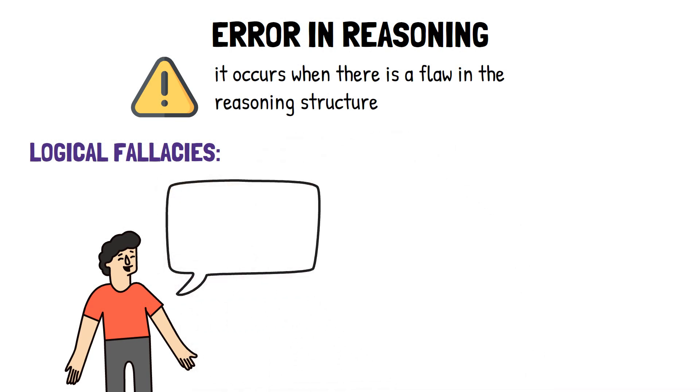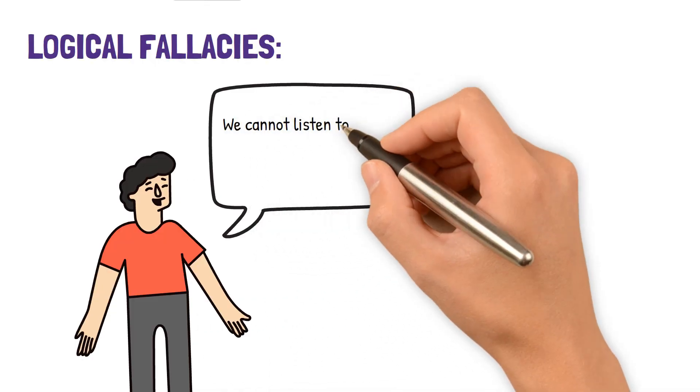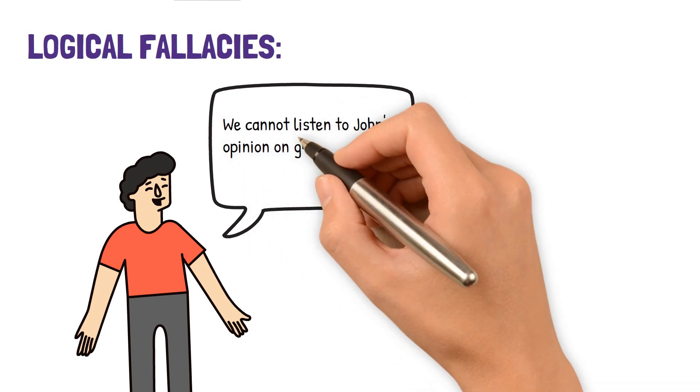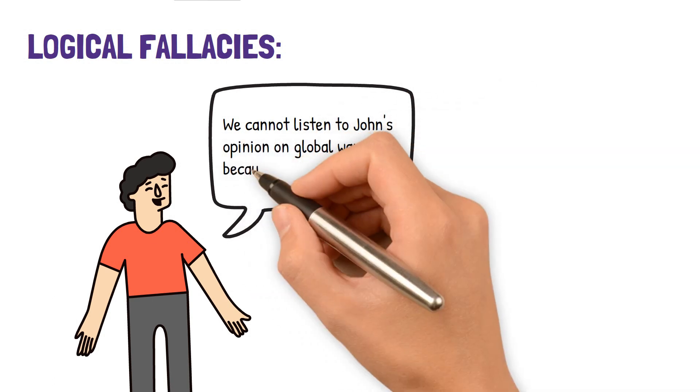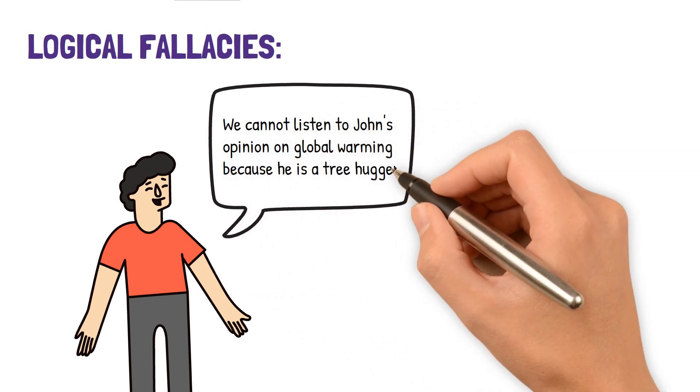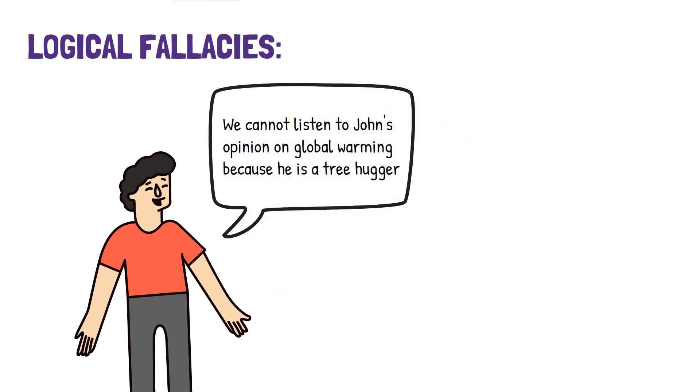For example, an ad hominem fallacy is where an argument is attacked based on the person making it, rather than being attacked based on its substance.